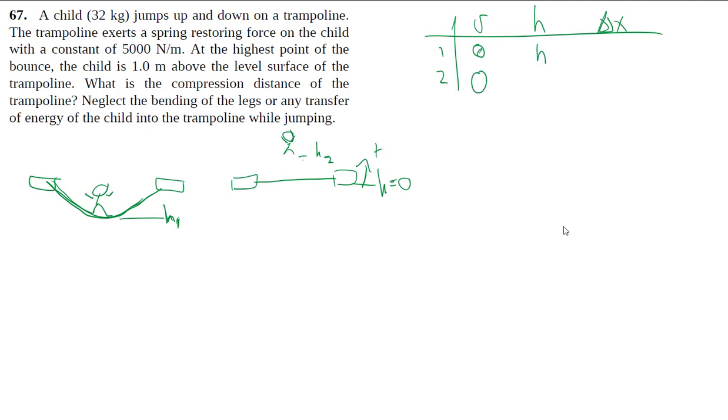For your h1, that's what we're after. That's the compression distance of the trampoline. Even though it's below zero, I'm going to use just h1 and know that in the end this should be a negative number.